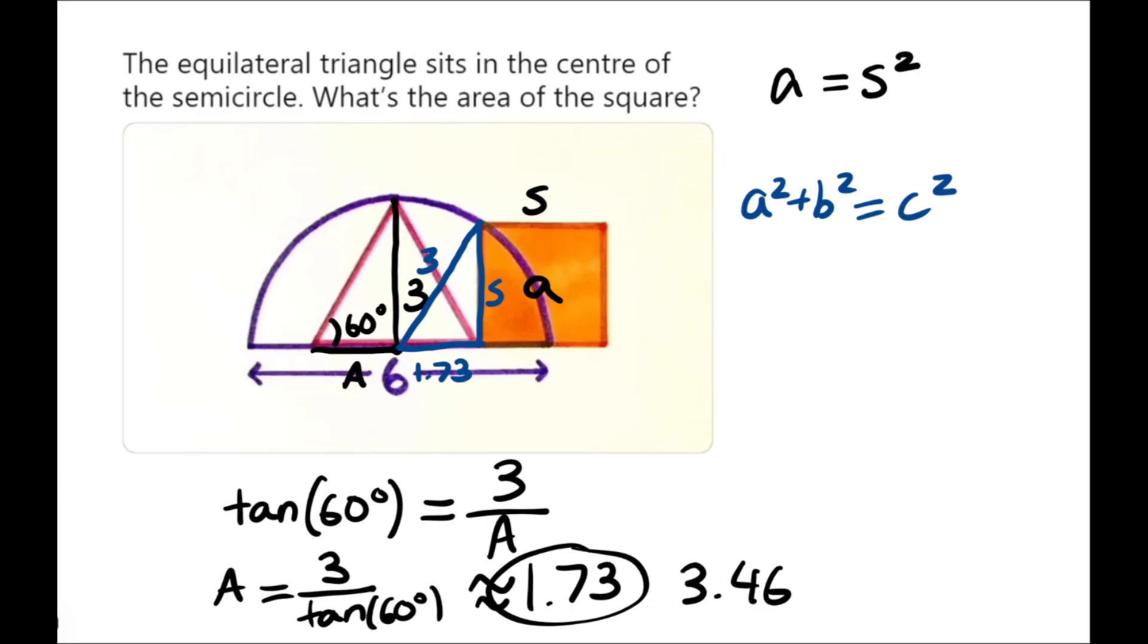C is going to be 3. A, we can just say, is 1.73. So, we're just going to have 1.73 squared plus B squared is equal to 3 squared. And we're trying to find B.